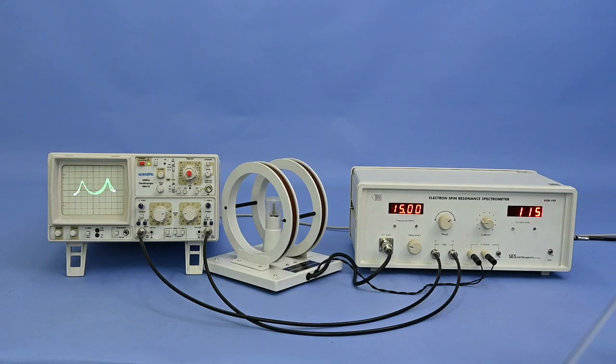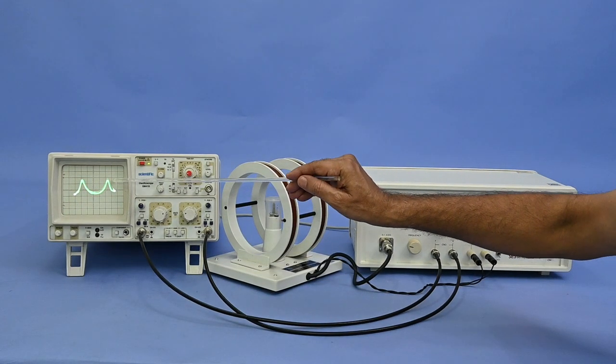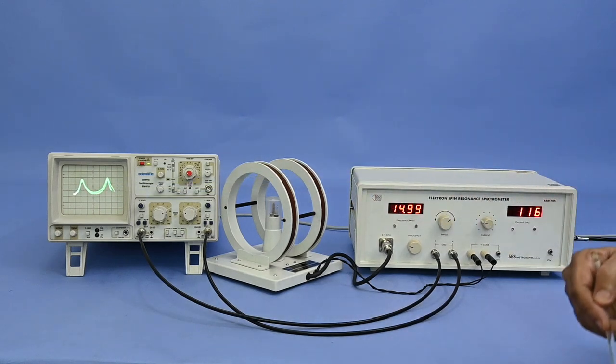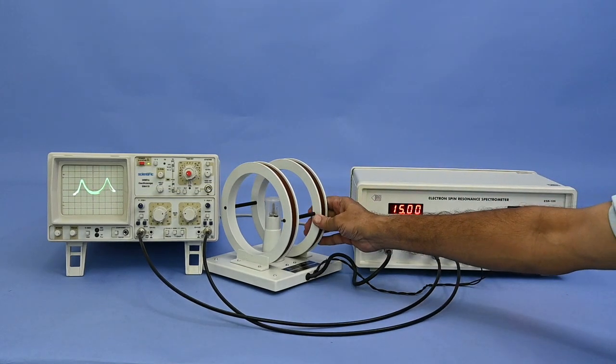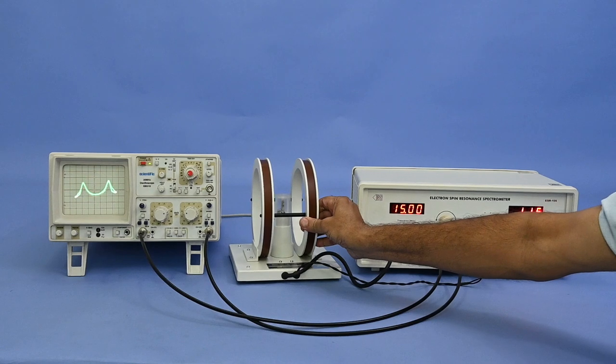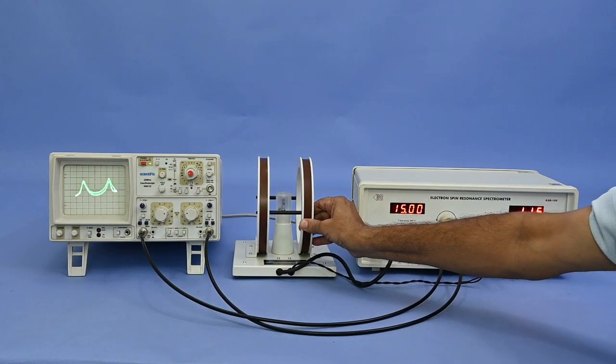If we see a little gap in the tips of the peaks, then adjust the orientation of the H coil to get the best results.